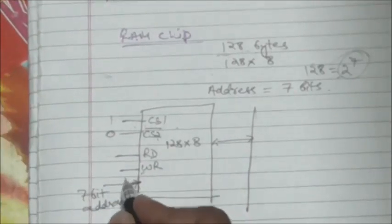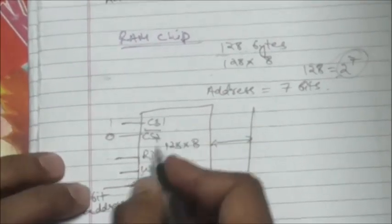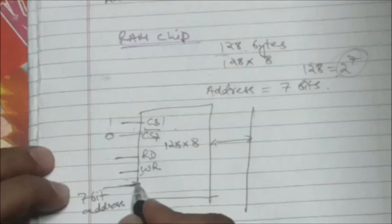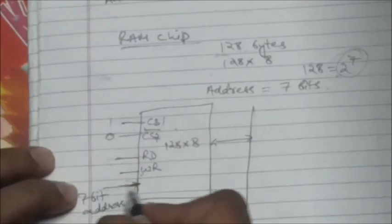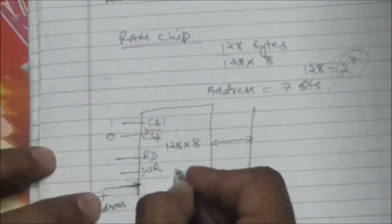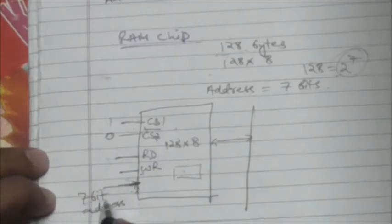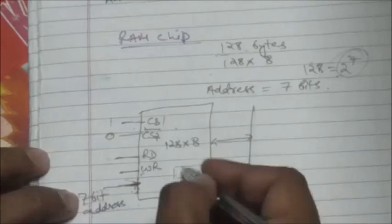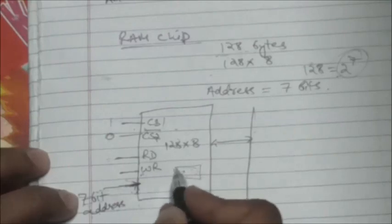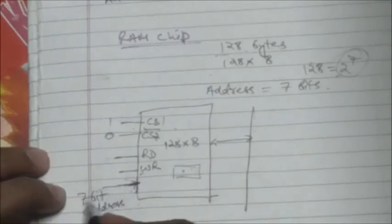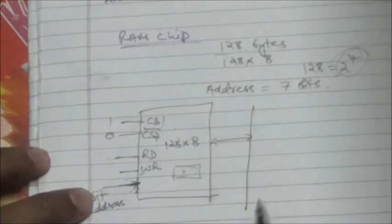When this chip is enabled by the chip select inputs, an address is provided at the 7-bit address input, and the read input line is enabled — whatever content is stored in memory at that specified address will be transferred from this memory to the data bus. In other words, the content at the given address is read.